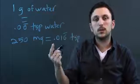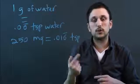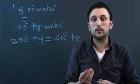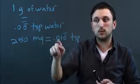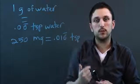So you have to look up whether, you know, if you're dealing with sugar or salt you're going to have to figure out the volumes, but with water, 250 milligrams of water equals 0.016 repeating teaspoons of water.